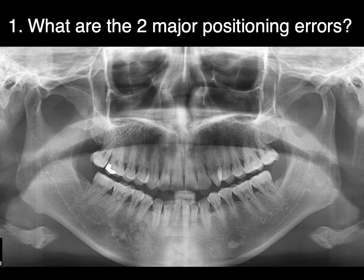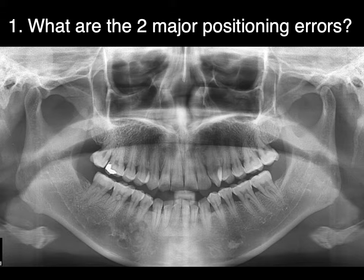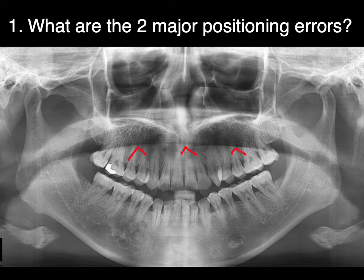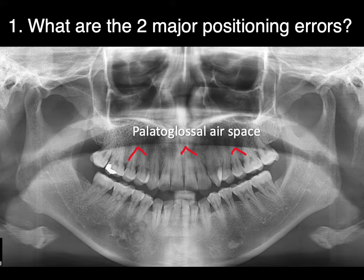So what are the two major positioning errors? A lot of times when there are positioning errors, there are more than one — sometimes more than two. We have to think about the major one and offer correction for the next time. We don't want to keep creating the same error again and again. The one that jumps out at me most on this film is this airspace — the palatoglossal airspace. It's the space between the tongue and the roof of the mouth when the patient doesn't keep their tongue to the roof of the mouth.